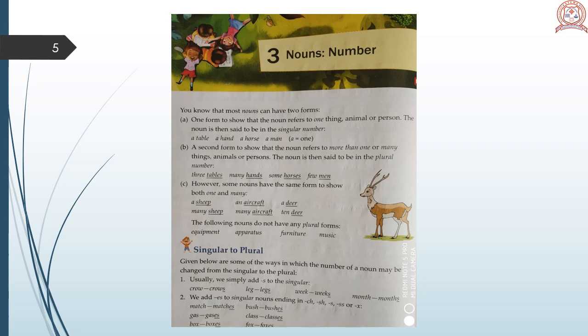There are some nouns, they do not have any plural forms like equipments, apparatus, furniture and music. Some ways in which the number of a noun may be changed from the singular to the plural. Usually, we simply add S to the singular like crow, crows, leg, legs, week, weeks, month, months. We add ES to singular nouns ending in S, SH, SS or X like gas, gases. Match, matches. Box, boxes. Bush, bushes. Class, classes. Fox, foxes.